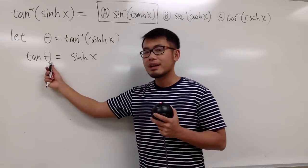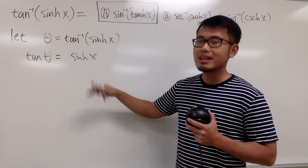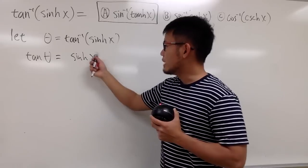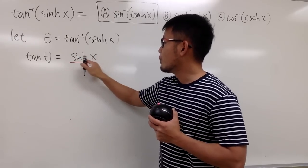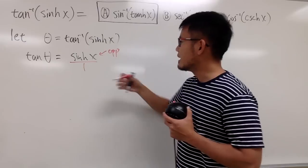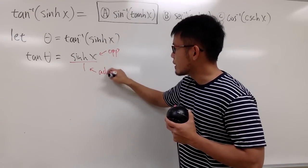we should have a ratio of two numbers, the opposite over adjacent, right? So let's look at sinh x as sinh x over 1. By doing so, we can say this right here is the opposite side of a right triangle. Likewise, this will be the adjacent side of the right triangle.